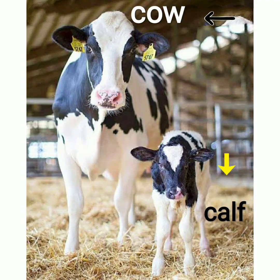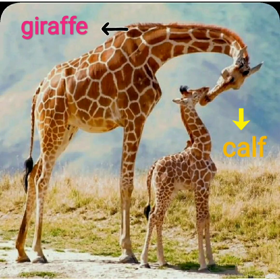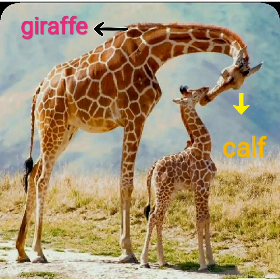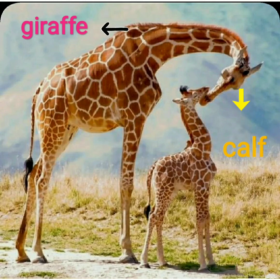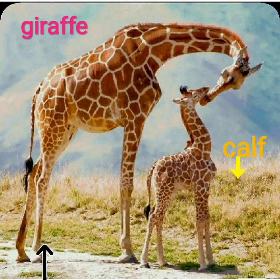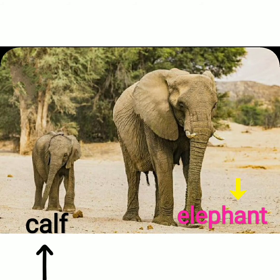The next one is giraffe and calf. Giraffe ke baby ko bhi calf kehte hain. Let's spell G-I-R-A-F-F-E, giraffe and the baby C-A-L-F, calf.